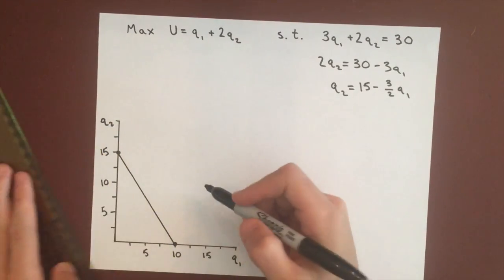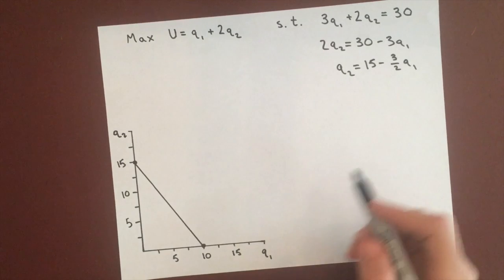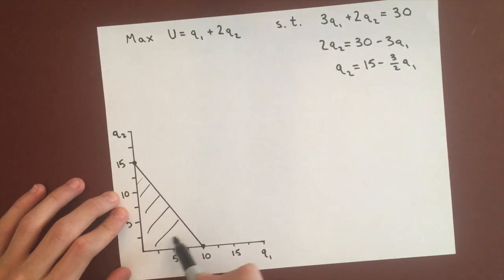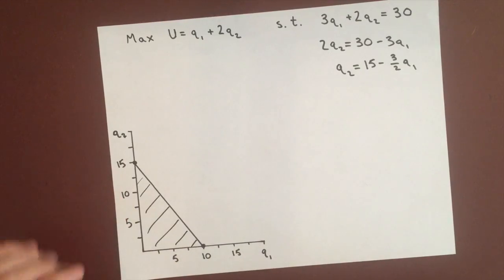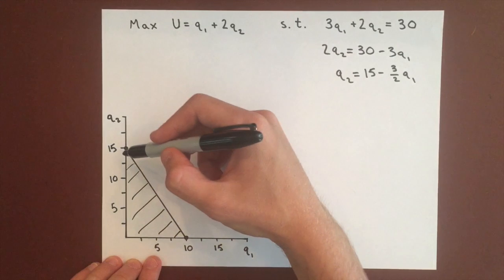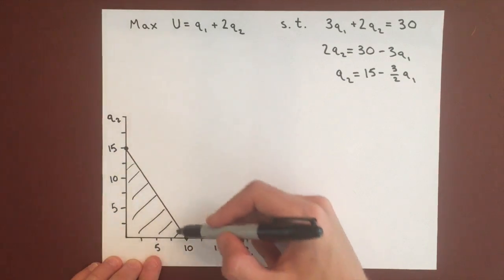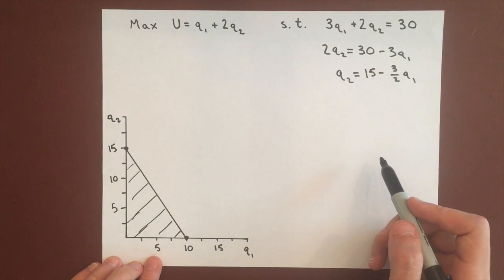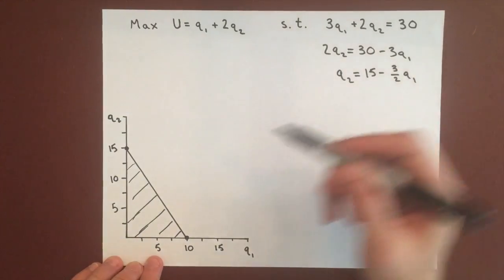We know we can afford anything closer to the origin, including this line. We want to find an indifference curve that is part of this area so we can afford it, but we want to find the one that gives us the most utility.